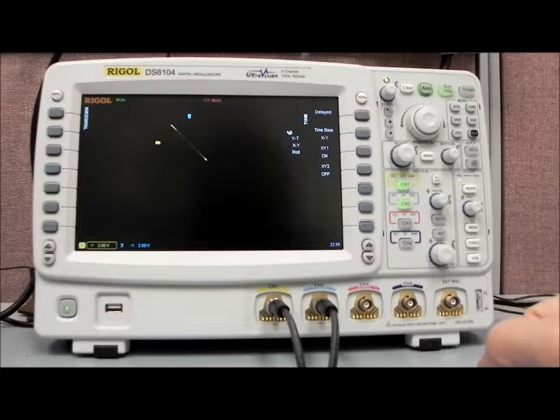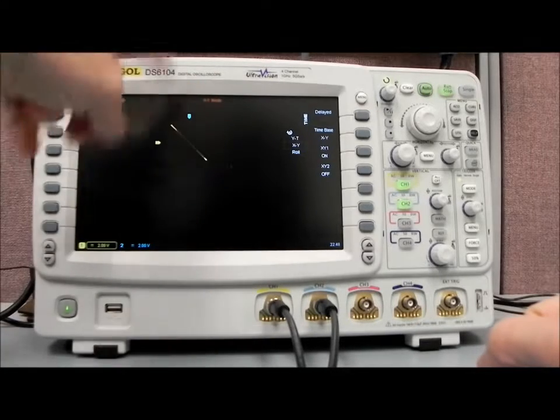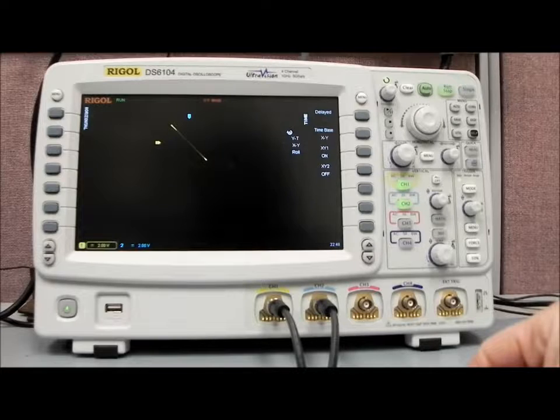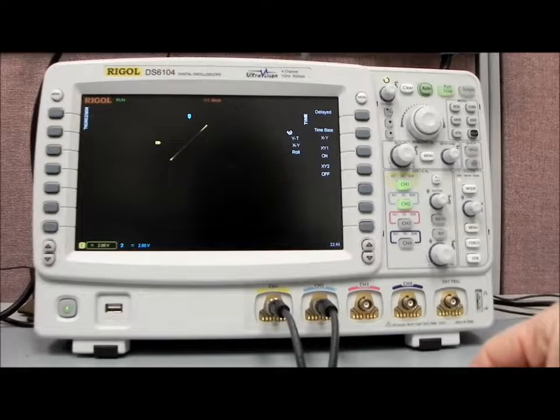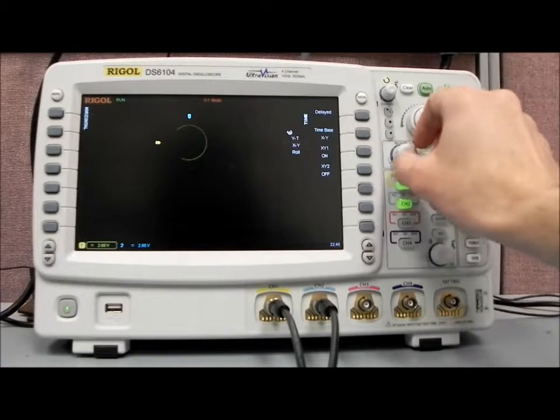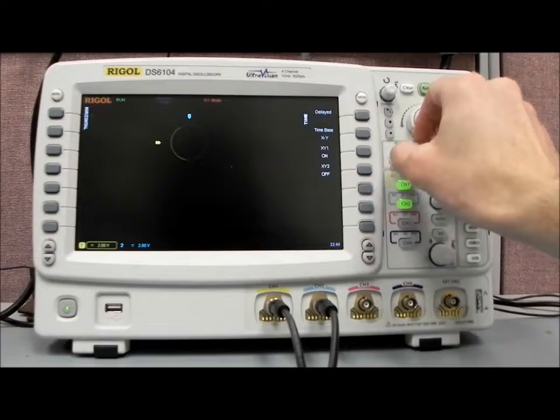The reason that we have a line is, again this is channel one versus channel two being plotted. Again, these are 180 degrees out of phase. If we set them to zero degrees out of phase, you'll see that it flips the line. If we set them to 90 degrees out of phase, that will become a circle and we may need to adjust the sample rate.